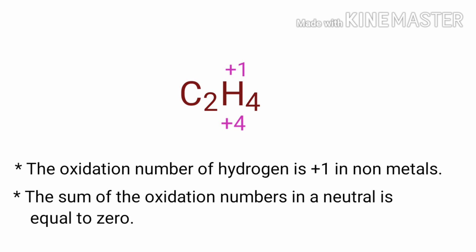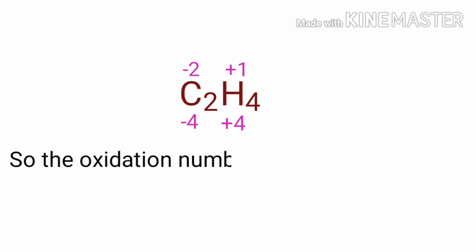So the number under C2 must be minus four. In the C2 element, there are two carbon atoms present, so we can write the oxidation number of carbon is minus two. Therefore, the oxidation number of C in C2H4 is minus two.